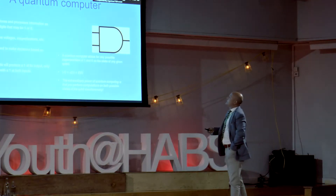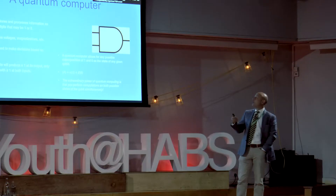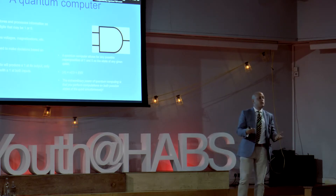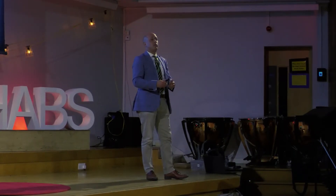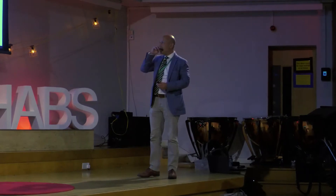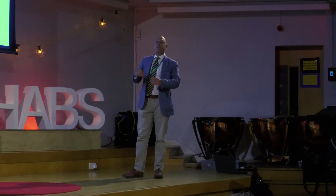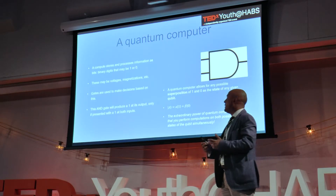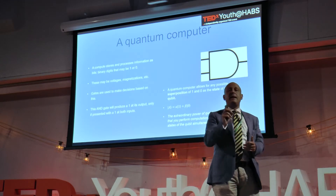A classical computer stores and processes information as bits — binary digits that can be a one or a zero. The bits can be voltages or magnetizations: when stored on a hard disk, they're magnetized or demagnetized; in computer memory, they're high and low voltages. We use gates to make decisions based on these, and that's computation. That's an AND gate up there on the right — it will produce a one, a high-voltage output, only if it gets a couple of ones as inputs. Quantum computing is different, because it allows any possible superposition of one and zero in every single step.